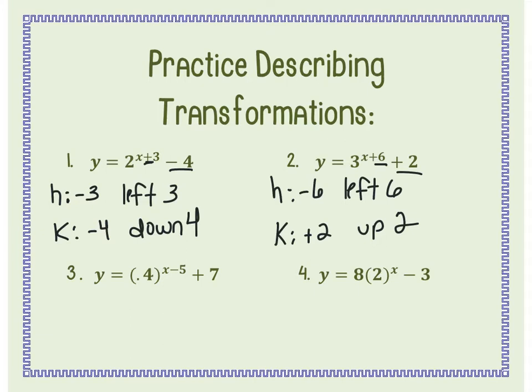Number 3 has a base of 0.4, which signifies exponential decay — this graph would be decreasing from left to right. The h value means the graph goes right 5. The k value is 7, so the graph goes up 7. It is a decay.